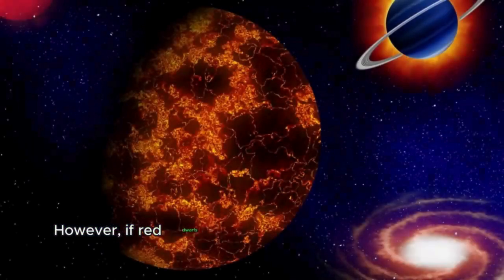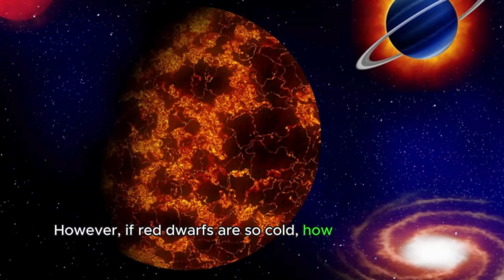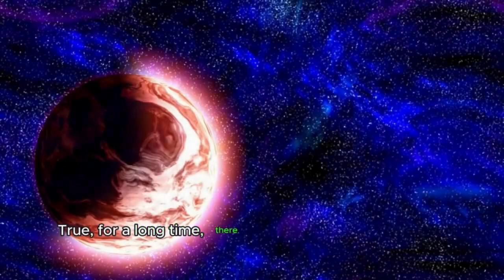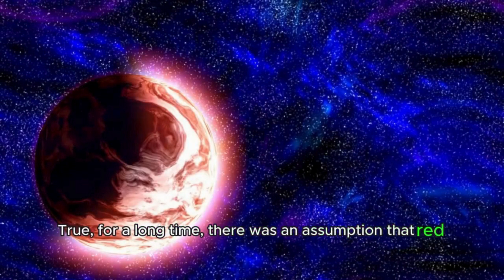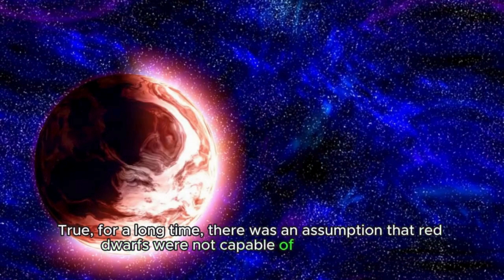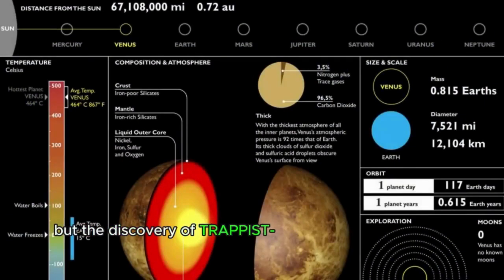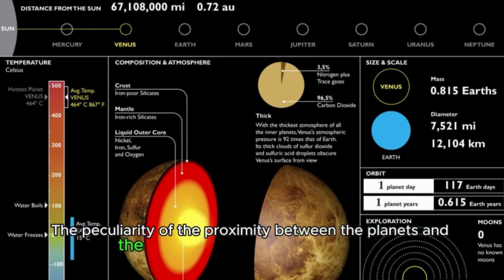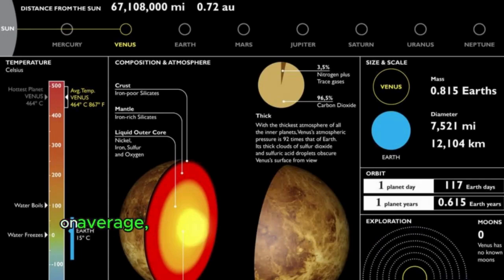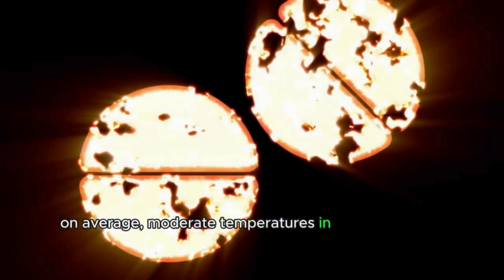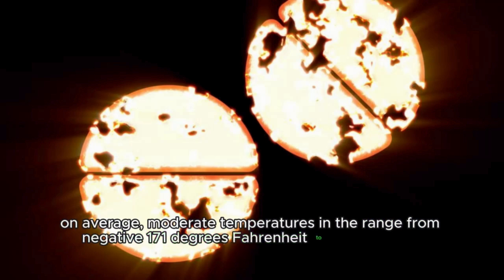However, if red dwarfs are so cold, how could they heat the entire planetary systems? True, for a long time, there was an assumption that red dwarfs were not capable of supporting life. But the discovery of TRAPPIST-1 has changed scientists' view. The peculiarity of the proximity between the planets and the temperature of the star maintains, on average, moderate temperatures in the range from negative 171 degrees Fahrenheit to 258 degrees Fahrenheit on these planets.